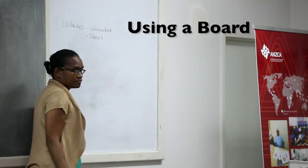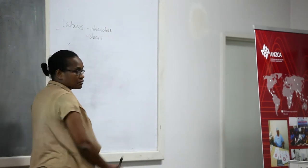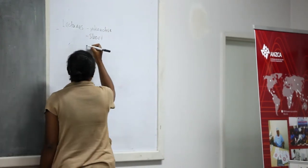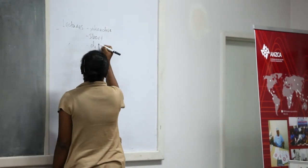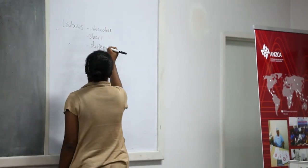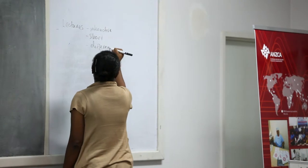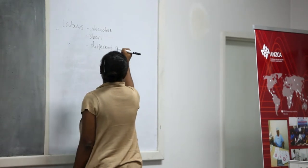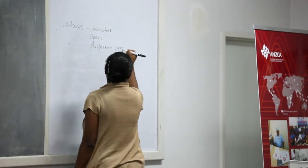It is sometimes very helpful to highlight discussion points on a board. If you do this, ask someone else to do the writing — this person is called the scribe. This allows you to concentrate on giving the lecture and interacting with the participants.